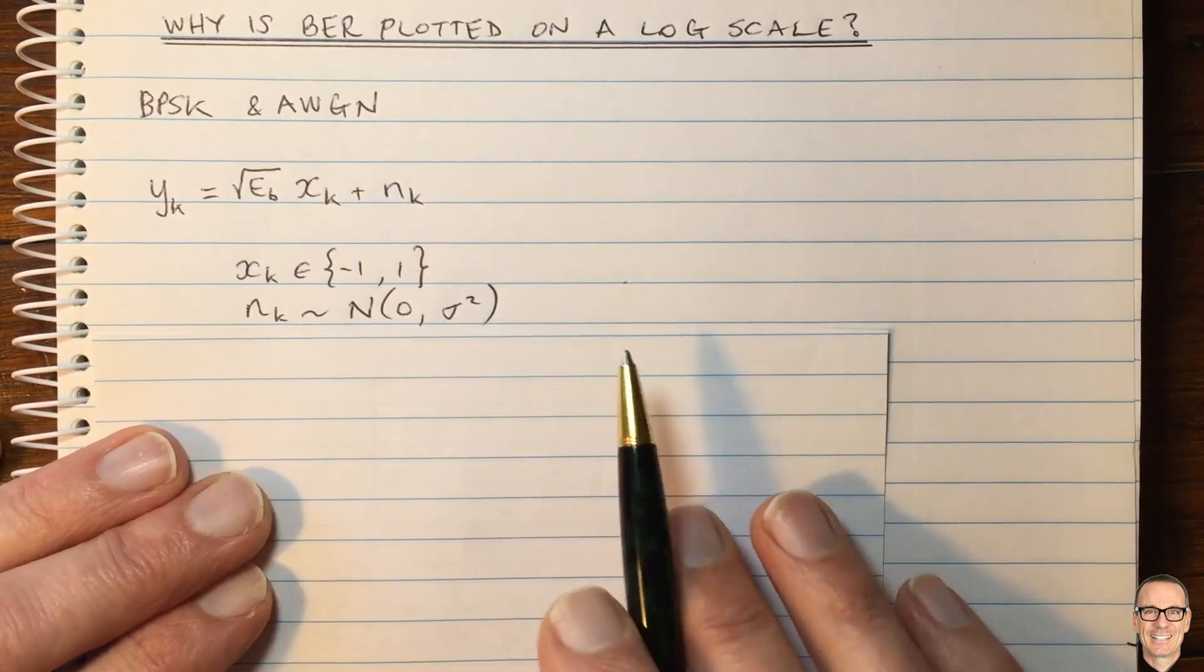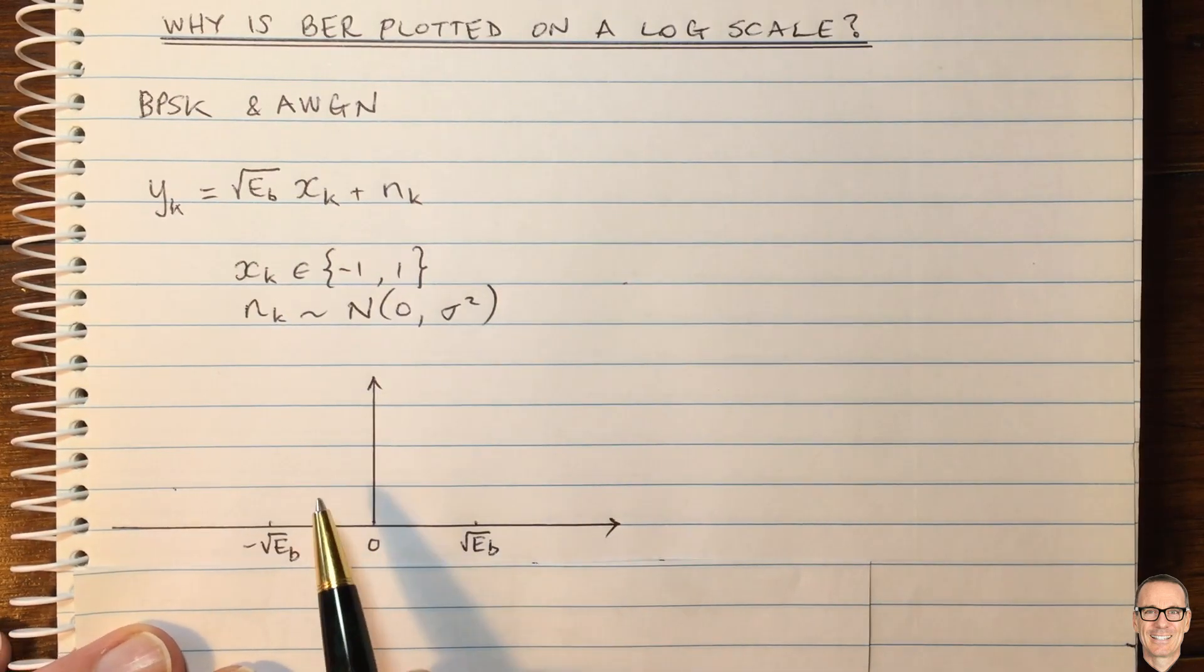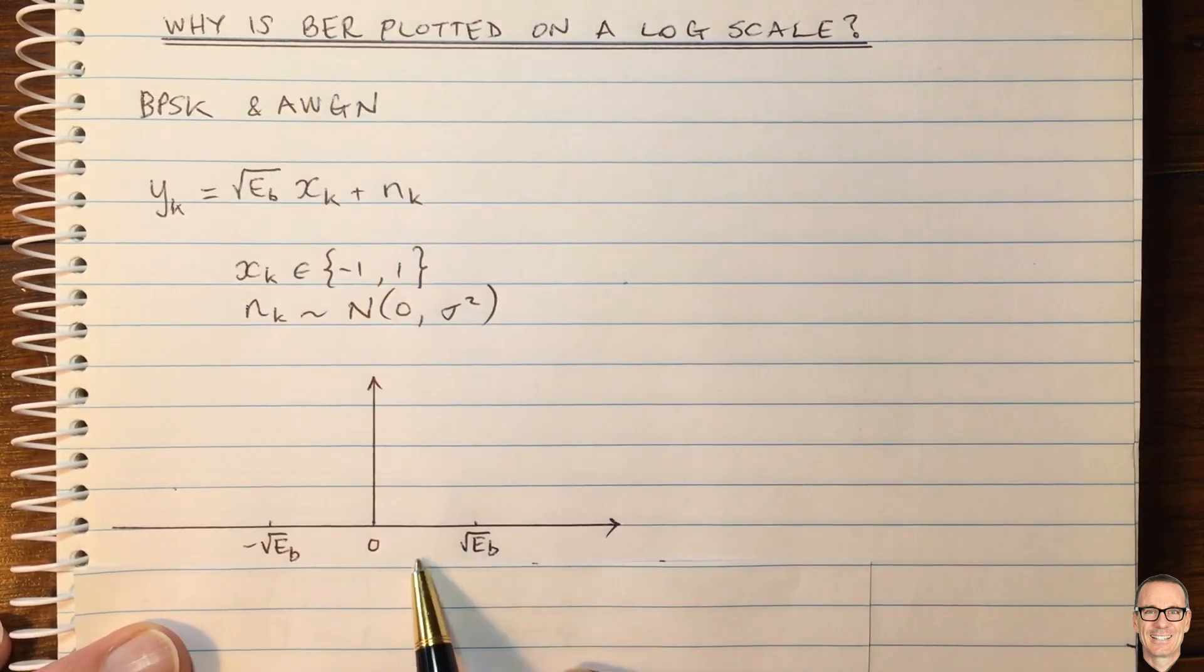So let's think about this and let's look at our drawing that we can make to try to understand the probability of making an error, because that's what we're interested in, the bit error rate plots.